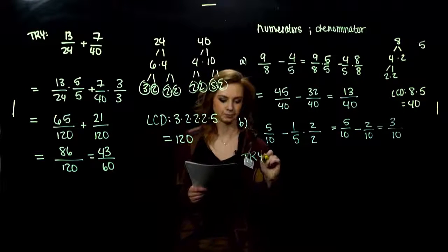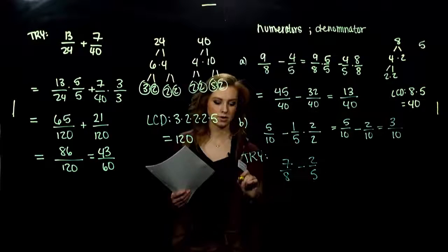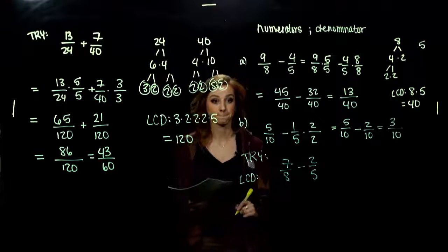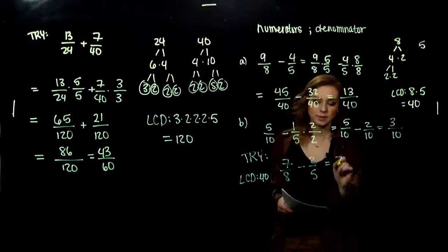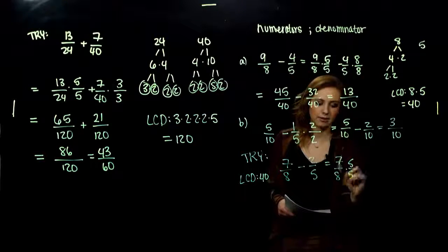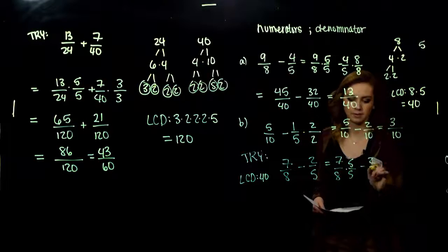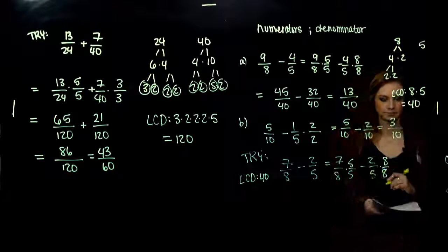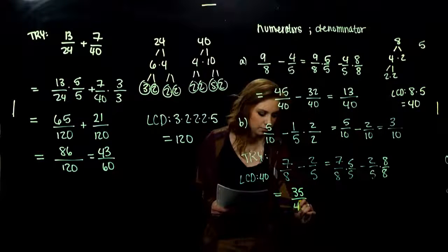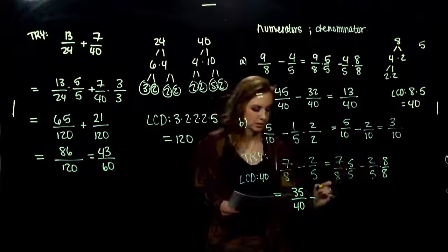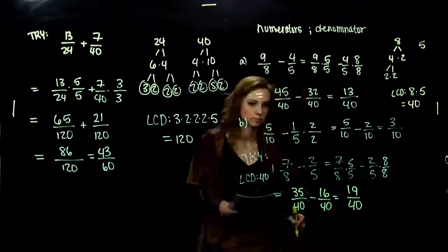Give it a shot — subtract 7 over 8 minus 2 fifths. What was your LCD between 8 and 5? We've already worked with it: 40. We need to multiply 8 by 5 over 5 to get there, and we need to multiply 5 by 8 over 8. That gives us an equivalent expression: 35 over 40 minus 16 over 40. How many fortieths do we have altogether? 19. So 19 over 40.